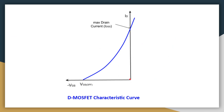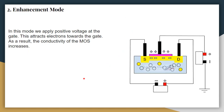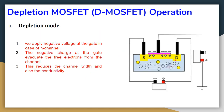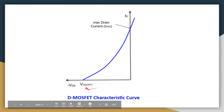In contrast, for the D-MOSFET, because the channel is already created during the manufacturing process, even with no gate voltage, a significant drain current flows between the source and the drain. If we start increasing the gate voltage towards the negative side, the drain current starts decreasing. At the pinch-off limit, the depletion region becomes so large that no current flows between the drain and the source.